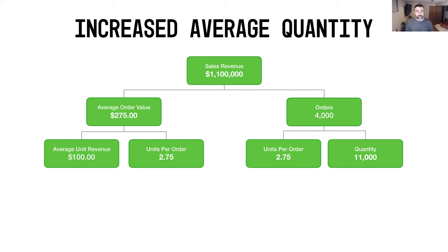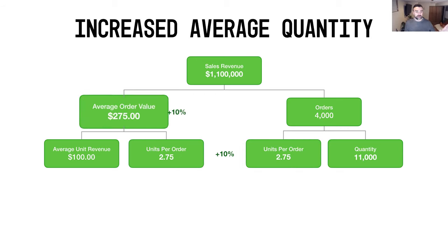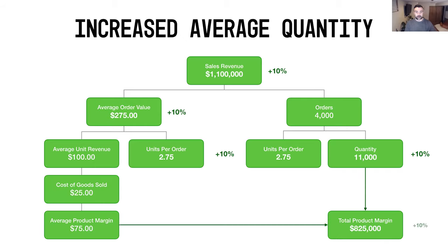Now if we increase our average quantity — or units per order — from 2.5 to 2.75, that's a 10% increase. On the left-hand side of the equation, you get an extra 10% on average order value, going from $250 up to $275. On the right-hand side, it also adds 10% to your units sold. Both of those add up to 10% overall on top-line sales revenue — $1.1 million up from $1 million. Similarly, it increases total product margin from $750,000 up by an additional 10%, or another $75,000 in gross product margin.